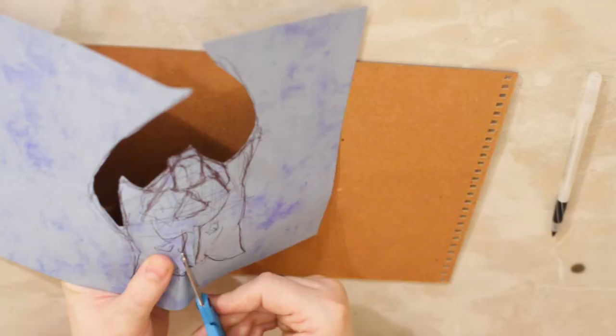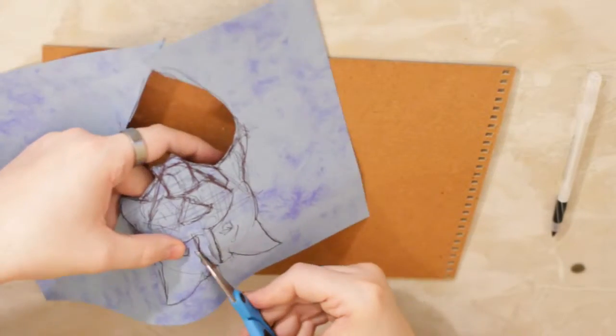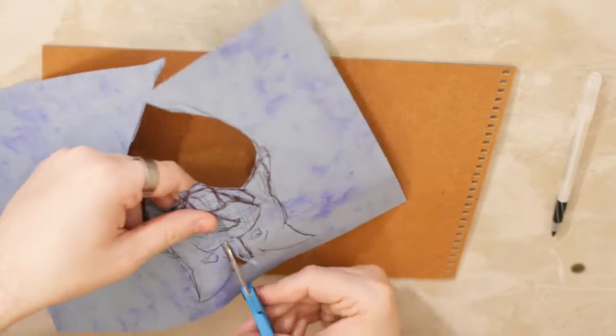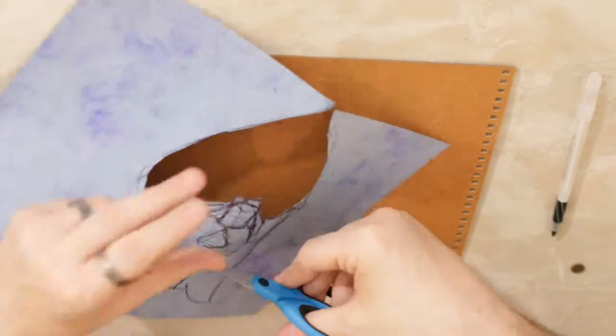Cut out this part. Remember border collies have like patchy looking faces, so they have a lot of really dark area and then they have a lot of really light area. We're gonna cut this out here. If you want, you can cut out the eyes.